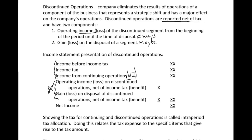Showing the tax for continuing and discontinued operations separately is called intraperiod tax allocation. This relates tax expense to the specific items that give rise to the tax amount. Notice that the income tax number up here is based on income from continuing operations and does not include discontinued operations. The income tax on the continuing portion is shown separately, and then the two discontinued operations numbers are shown net of their tax effect. If it was a loss, remember losses lower income so we pay less taxes — that's called a tax benefit.